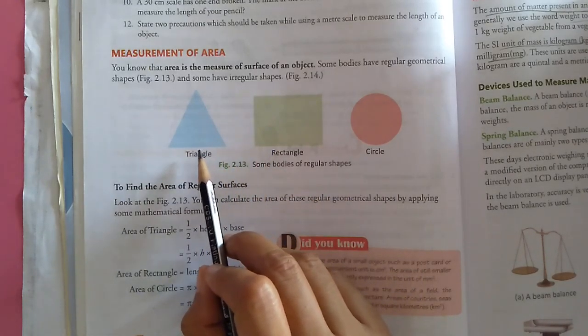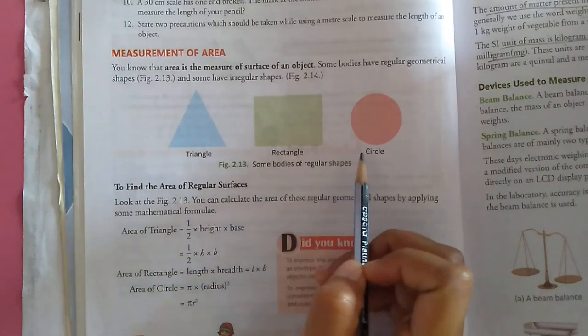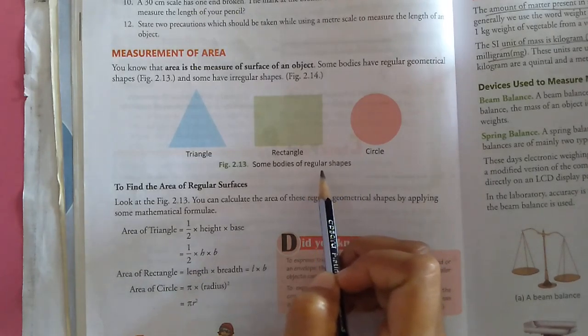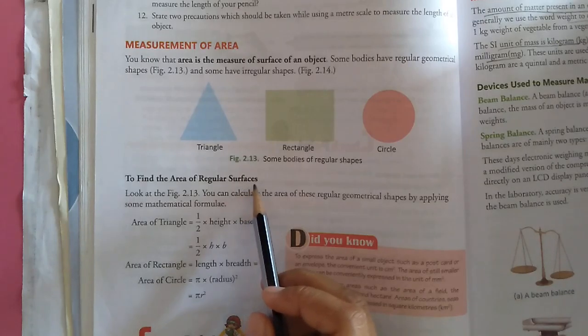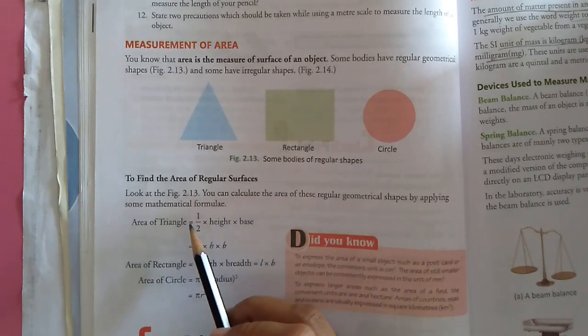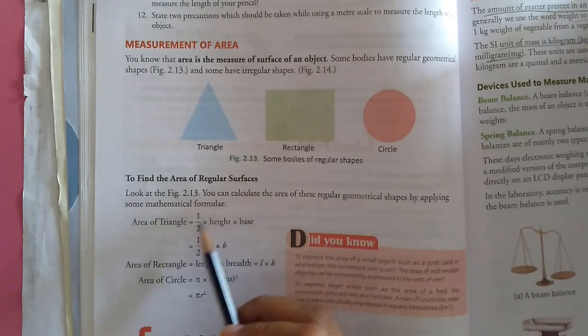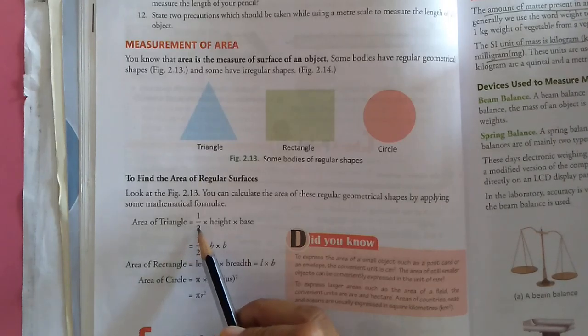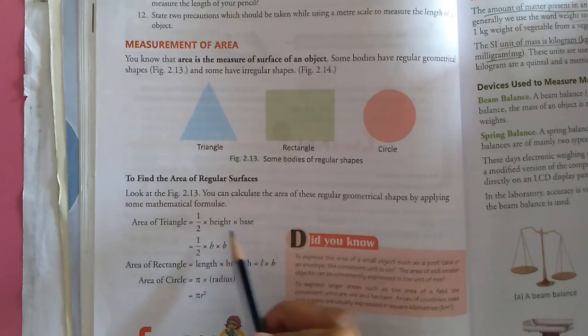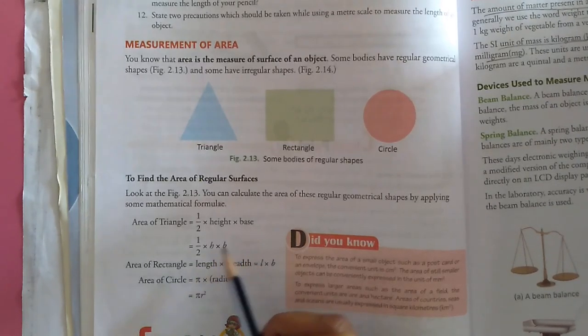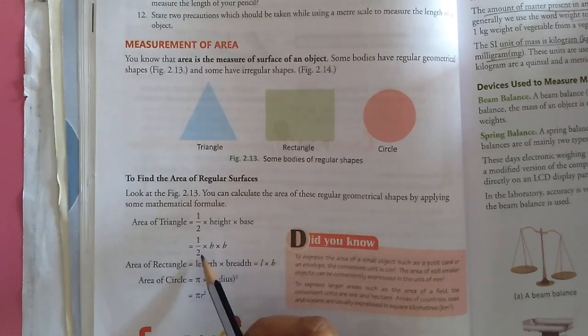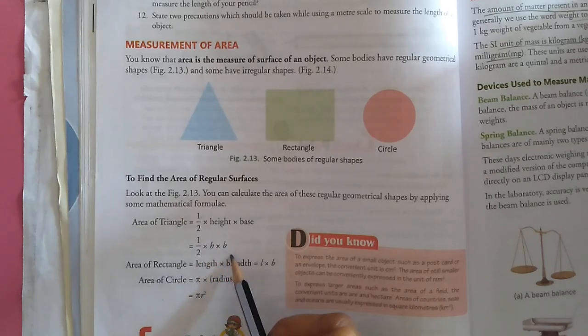Some bodies have regular geometrical shapes and some have irregular shapes. You can see triangle, rectangle and circle. These are bodies of regular shapes. To find the area of regular shapes, we use some mathematical formula. Just like area of triangle equals to half into height into base.